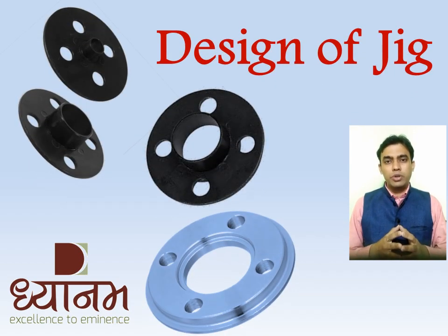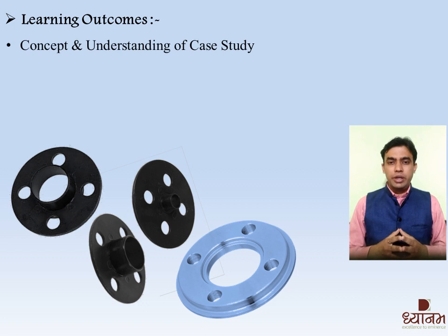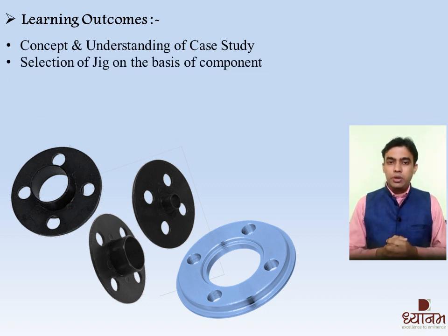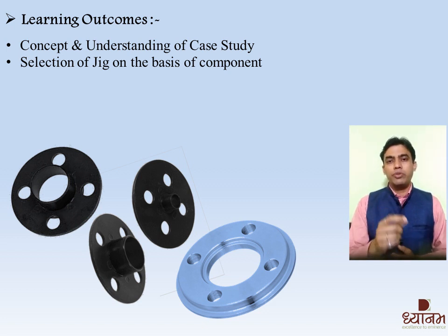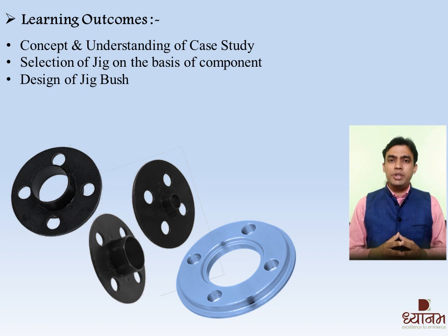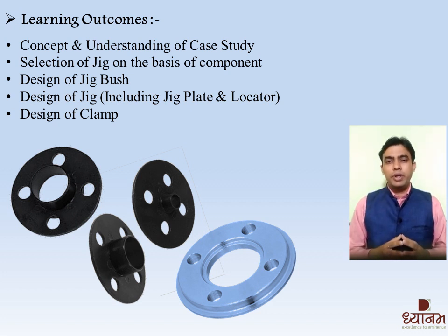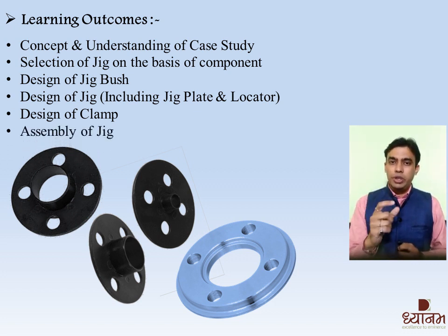First we will move towards the learning outcomes and then we will look upon the case study. The learning outcomes are: first, concept and understanding of case study; second, selection of Jig on the basis of component; third, design of Jig bush through different set of formulas; fourth, design of Jig plate which will include design of specific Jig as well as locators; fifth, design of clamping device; and the last outcome will be assembly of Jig — assembling all the components and understanding the design through the given data.